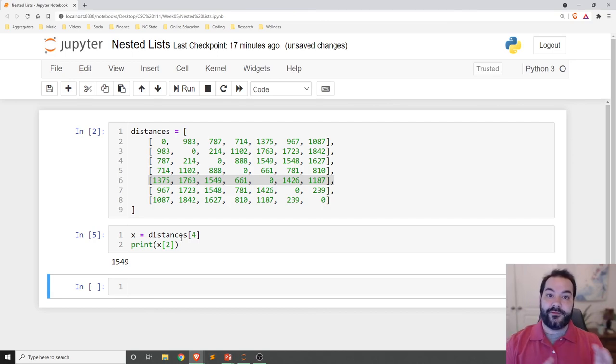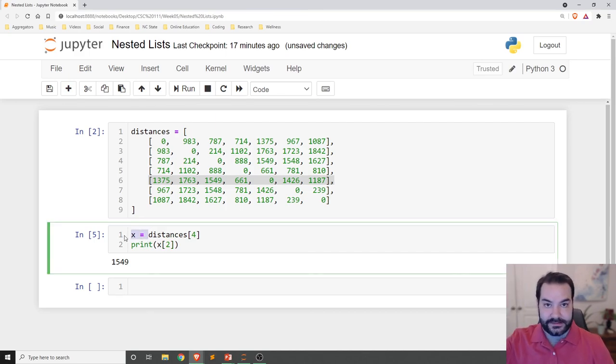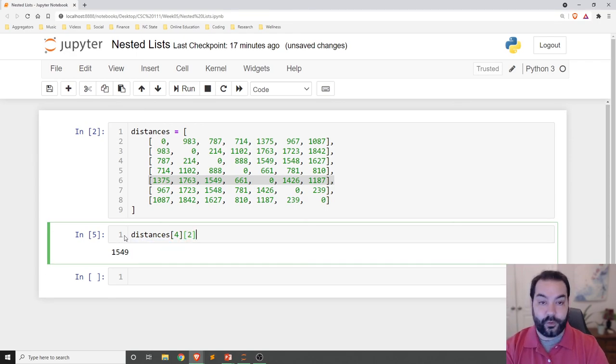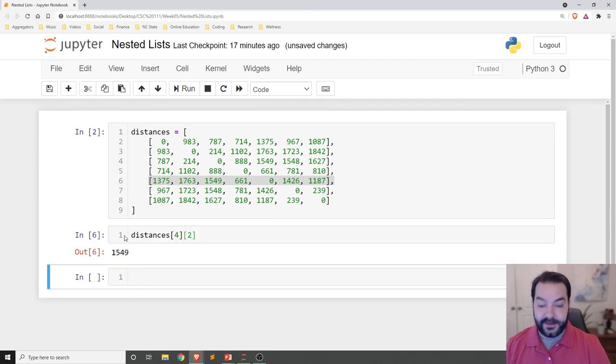But, finally, just to throw that concept out of the window, we don't need to have a temporary x to reference and get that list. I could simply just say something like square bracket four, square bracket two. And it will, once again, get that same value. So, that's how we can work with nested lists.